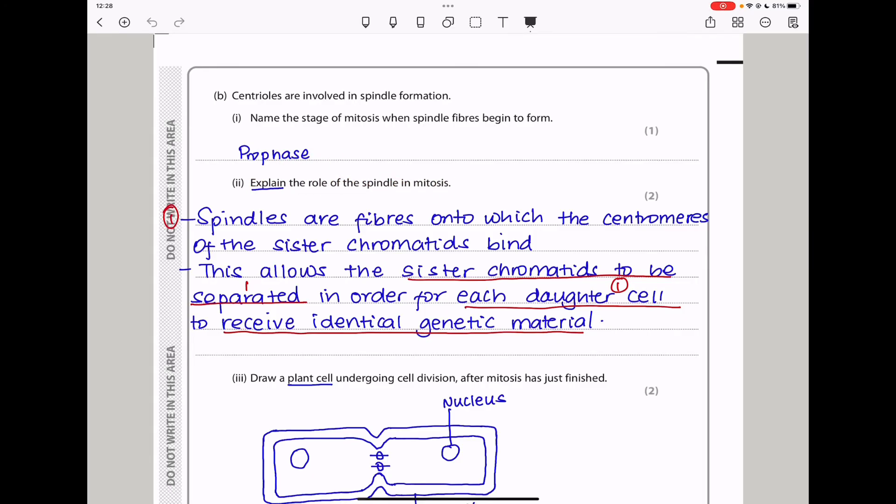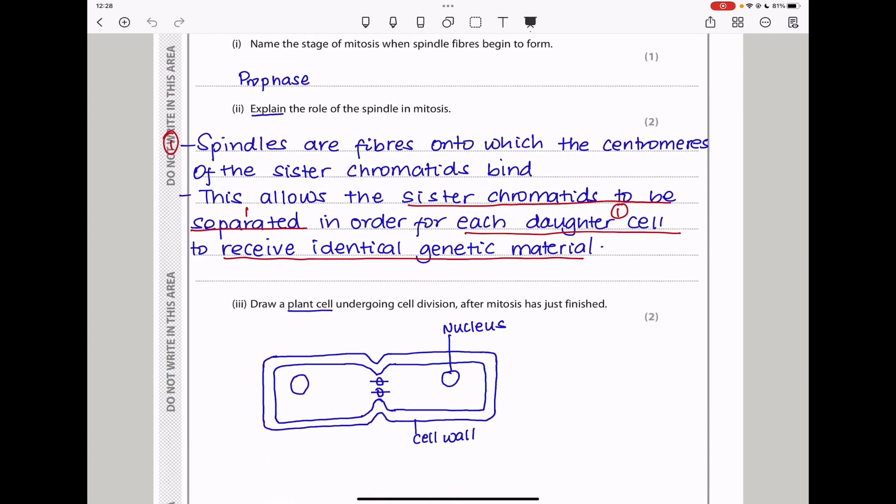The next part says, explain the role of the spindle in mitosis. Now, spindles are fibers onto which the centromere of sister chromatids bind. And this will allow the sister chromatids to be separated, meaning they will go into separate cells, in order for each daughter cell to receive identical genetic material.